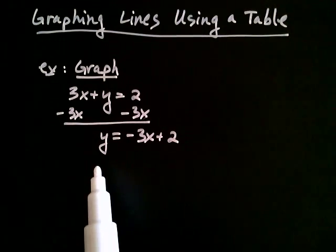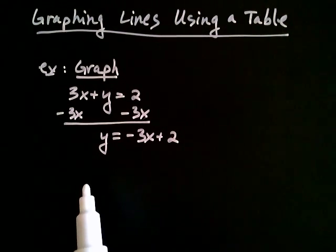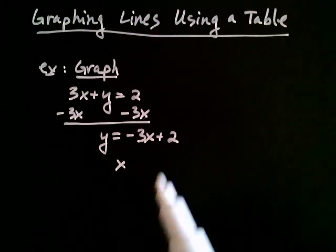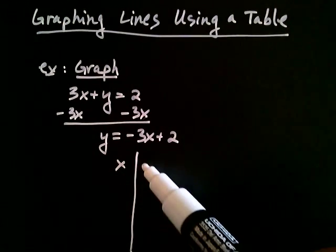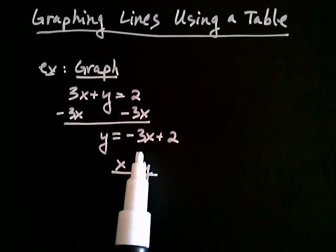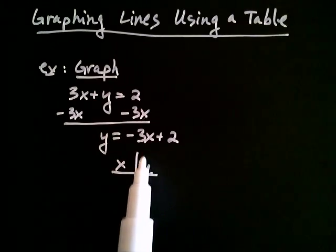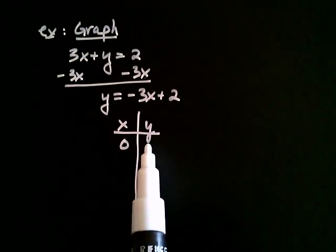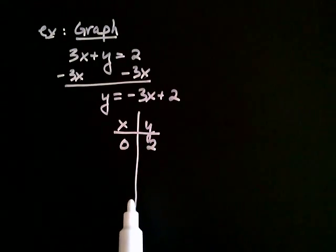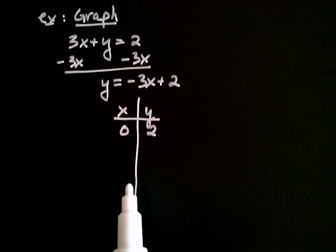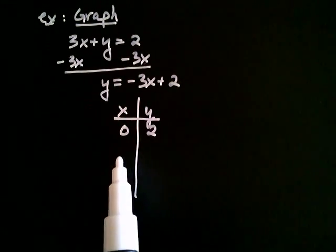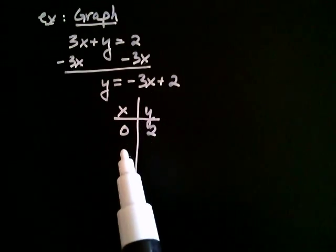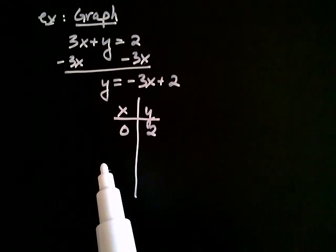The reason we chose to isolate the y is because it makes creating a table easy. So what we'll now do is set up our table. With y isolated, I can choose values for x and figure out what the corresponding y is. For example, when x is zero, y would be two. Now remember, whatever values you choose, you're going to have to graph. So I wouldn't want to choose something like x = 15 because I'd have such a large number that it would make it awkward to graph.